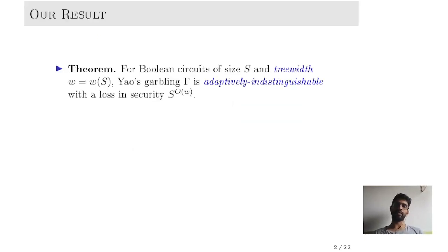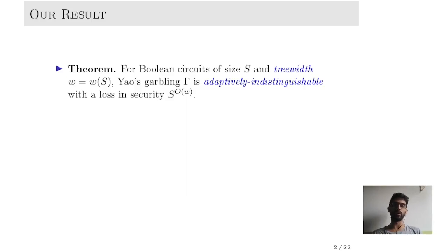Our main result says that for yaw-scarbling of size S and tree-width W, yaw-scarbling is adaptively indistinguishable with only a loss in CQT which is S to the O of W. As a consequence, yaw-scarbling is adaptively indistinguishable for constant tree-width circuits with only a polynomial loss in security.